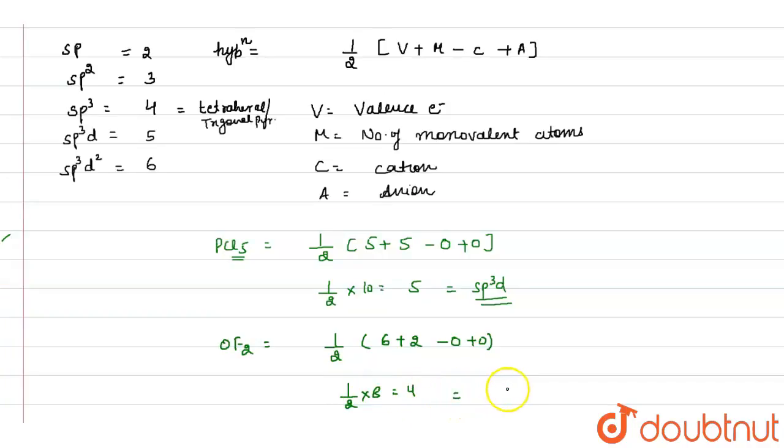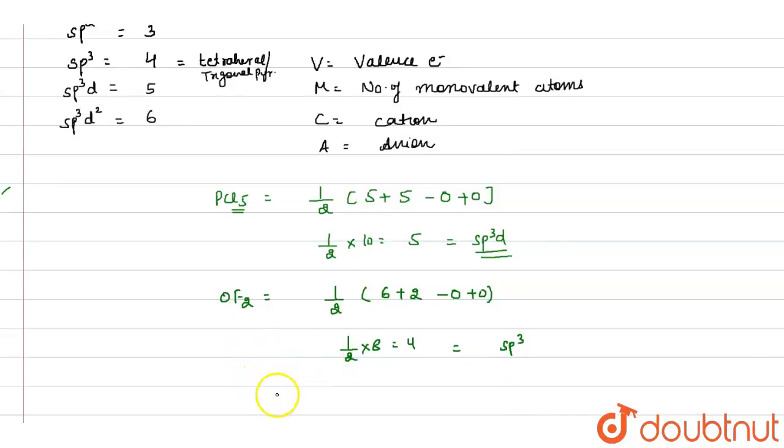If it is 4, that means it is sp3 hybridized.